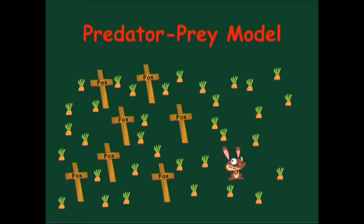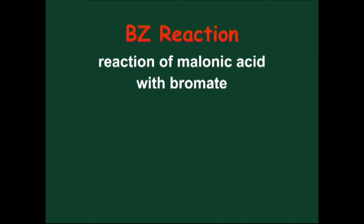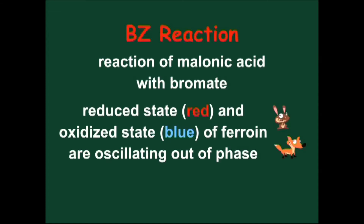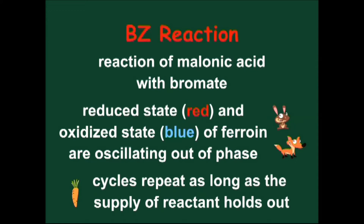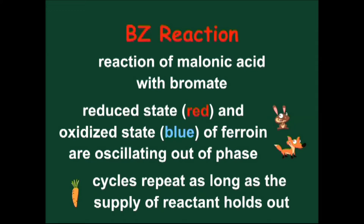But let us return to the Belousov-Zhabotinsky — in short, the BZ reaction — the reaction between malonic acid and bromate. Here, the reduced and oxidized states of the redox catalyst ferroin are oscillating out of phase, just like the rabbit and fox populations. The cycles repeat as long as the supply of reactant holds out.